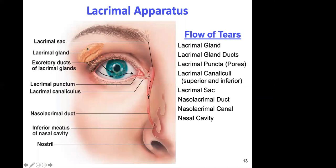Here's the lacrimal gland, which is superior and lateral. Cranial nerves seven and nine are involved with lacrimation. Tears roll down to the inner eye, clean the eye, then drain through the lacrimal canal into the nose. Because the tears are loaded with histamine, the inner nose swells and you get that congested nasal sound — that's why when people cry, their nose gets stuffed.